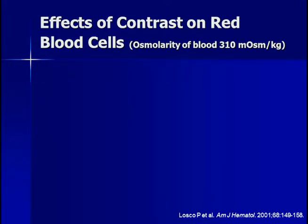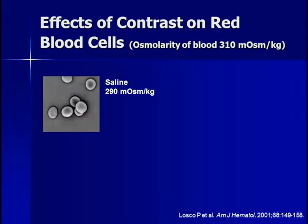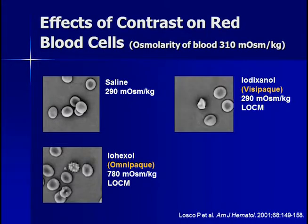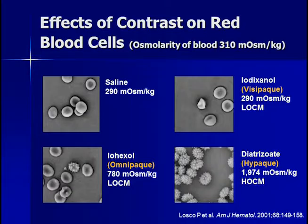Normal blood osmolality is 310 milliosmoles per kilogram. In normal saline at 290 milliosmoles per kilogram, red blood cells have a normal appearance. With low osmolar solutions such as Visipaque, red cells are not significantly deformed. The more commonly used OmniPaque, while called low osmolar, is actually 780 milliosmoles per kilogram, and some red blood cell deformation is visible. With the old high osmolar agents such as Hypaque, which had osmolality more than twice that of OmniPaque, red blood cells were very much deformed.